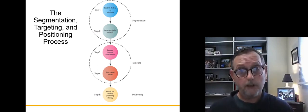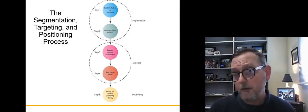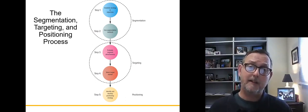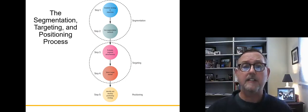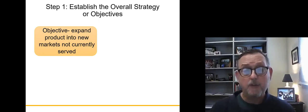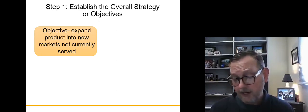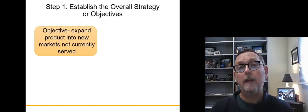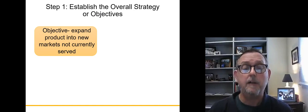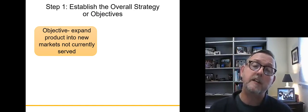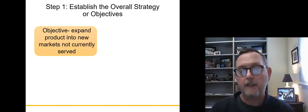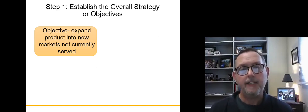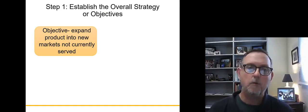Step one is establishing objectives — what we want to accomplish as a result of the strategy we're going to design. One of our goals is to grow and identify ways to build a business model that will be sustainable, that will take advantage of our core competencies, and create value in the marketplace. The strategy we choose needs to meet those types of goals and objectives.